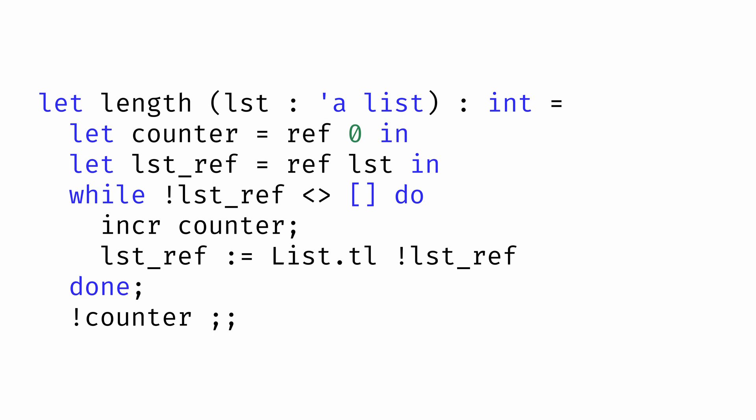This repeats for every element in the list, until we update the list to be the empty list, at which point we exit the loop, and return the result of dereferencing the counter, which will give us the number of elements in the list.